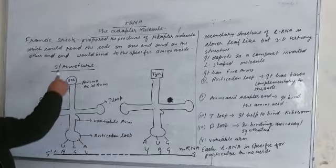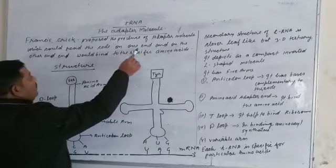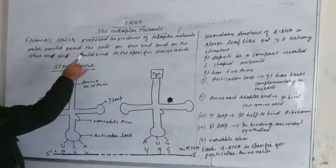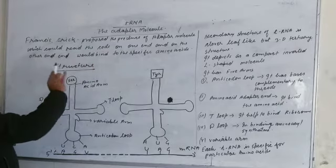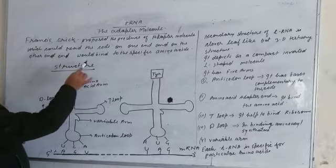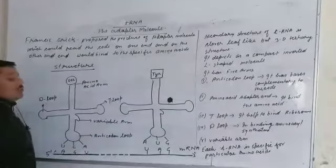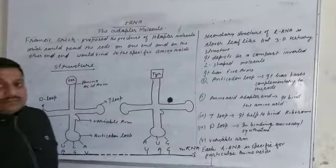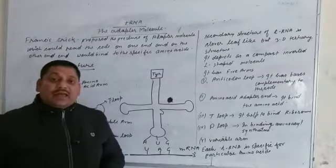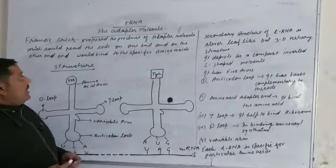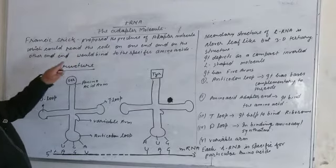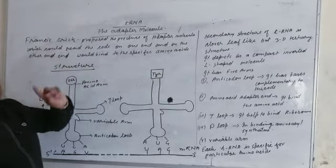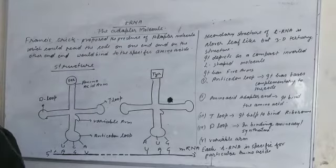tRNA has two ends. On one end it has an anticodon, and on the other end a specific amino acid will bind up.